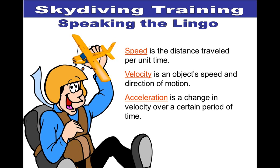Velocity is an object's speed and the direction of motion, making it a vector quantity. You can travel 40 miles per hour to the north or 40 miles per hour to the south, so velocity has a positive or negative sign to indicate direction as well as an amount for speed. Acceleration is also a vector quantity — it's the change in velocity over a period of time. An increasing velocity is positive acceleration; a decreasing velocity is negative acceleration.